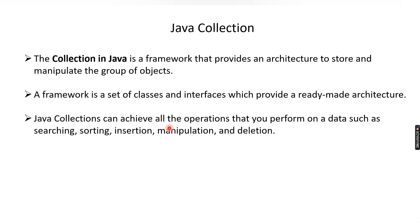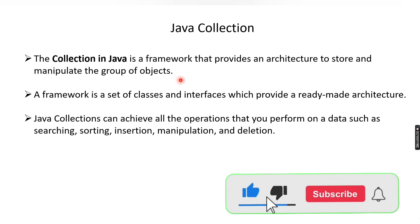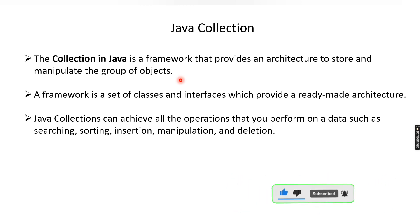Java collections can achieve all the operations that you perform on data. Whenever you have variables or data, the different types of operations you can perform are searching, sorting, insertion, and manipulation. Manipulation is basically update and deletion. So all these operations can be performed on your Java collections. You can consider a collection as a variable that stores a group of objects.